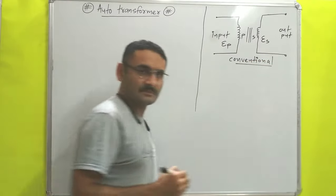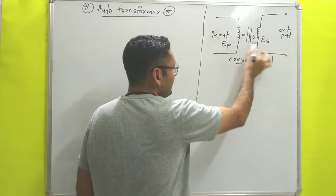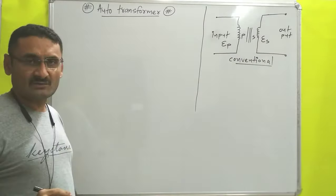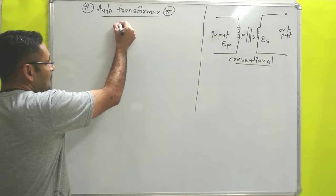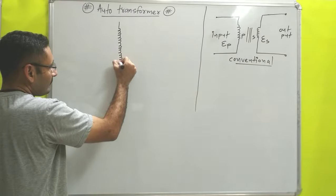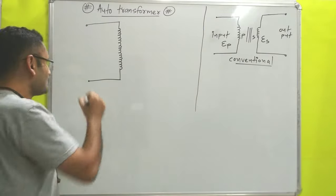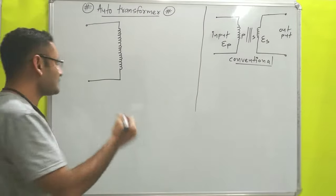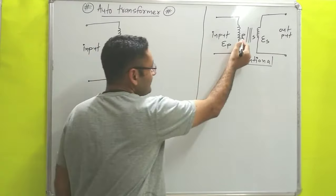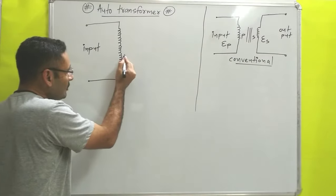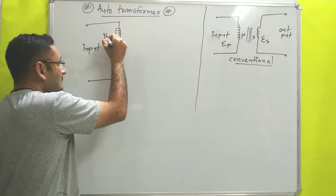In the case of auto transformer, two different windings - primary and secondary - are not used. In the auto transformer, only one winding is used. So here I will draw only one winding. There is one terminal on each side, and across these two terminals we will supply the AC voltage - that will be our input side. The input side is always connected with a primary winding.